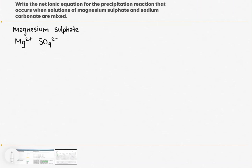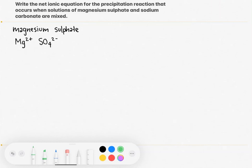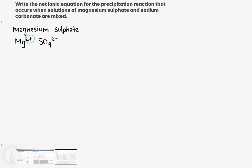Those are the two ions that make up magnesium sulfate. To write the ionic formula, we need to combine these two ions to form a neutral ionic compound — ionic compounds do not have charges. We need to cancel out the charges when combining the ions. The easiest way is the crossover method, where we bring the number from the cation down below the anion, and vice versa.